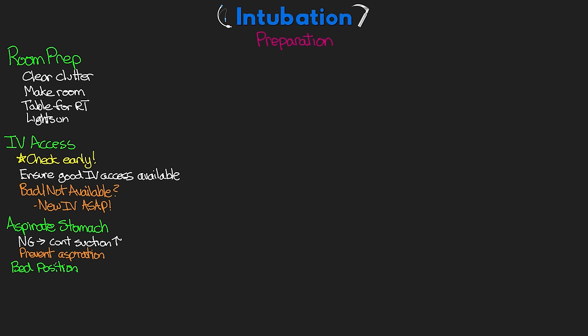For bed positioning, pull the bed away from the wall at the head and remove any removable headboard to facilitate intubation. When it comes time to intubate or use the bag valve mask, the patient needs to be lying flat. For those in respiratory distress this may not be possible until after the sedative is given — these patients often need to sit up in high Fowler's and won't tolerate lying down. The bed also needs to be raised to a comfortable height for the person intubating; get that elevated and make final adjustments once the patient is flat.